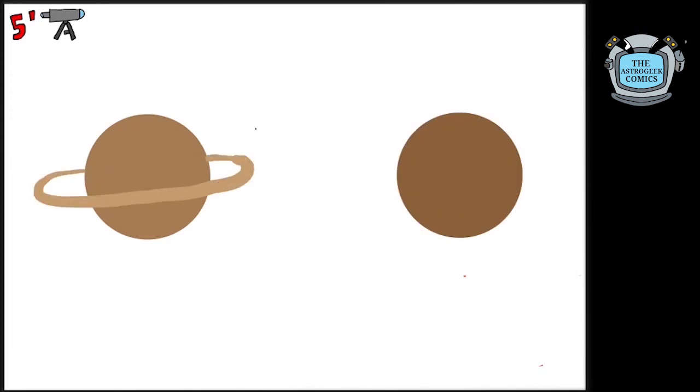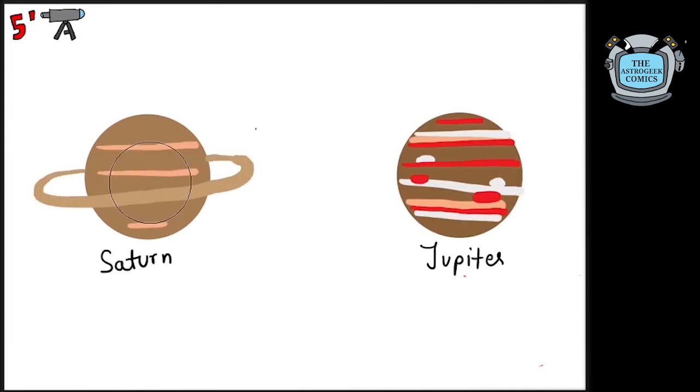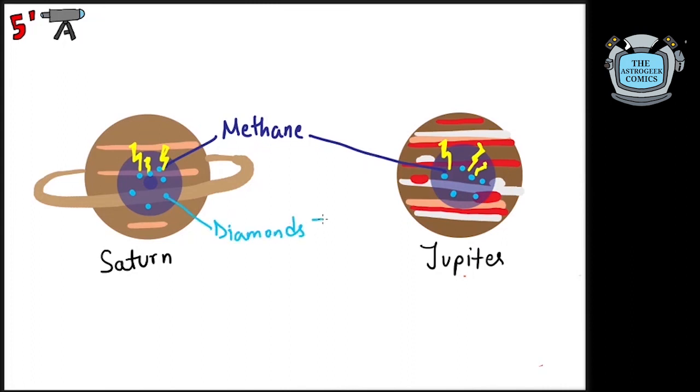Recent studies have also shown that diamond rains may be happening even on Saturn and Jupiter. While these planets have comparably less methane, it is present in the interior of these gas giants. Here, the tremendous thunderstorms rip carbon from methane and even higher pressures and temperature convert them into diamonds.